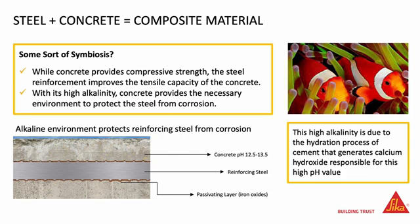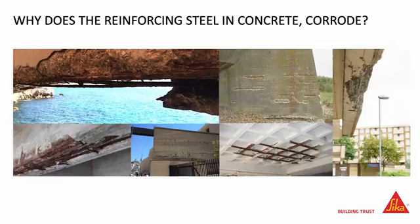While this protective layer is maintained, the steel remains passive and free from corrosion. Steel has a tendency to revert back to its original state — iron oxide. This phenomenon is called corrosion, and it happens when the passivity of the steel is lost due to various reasons.